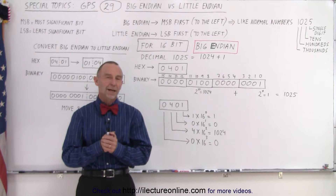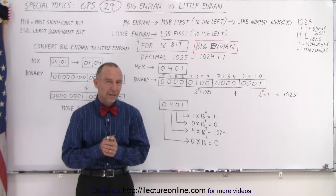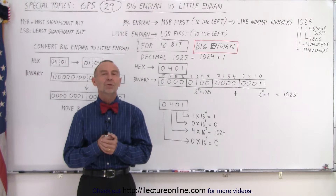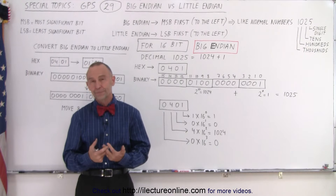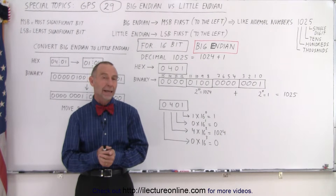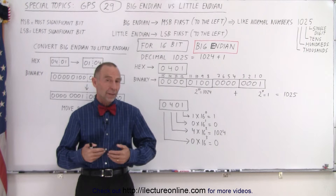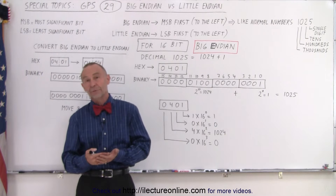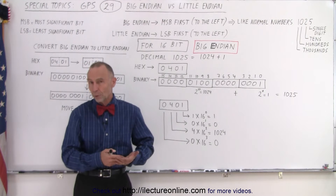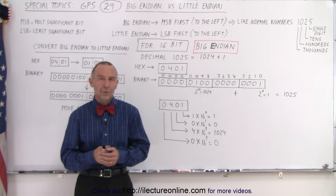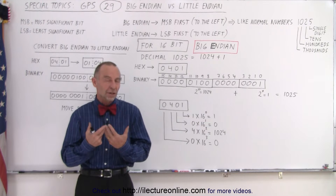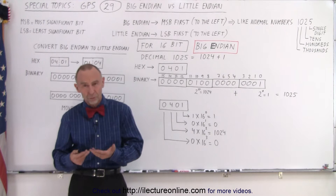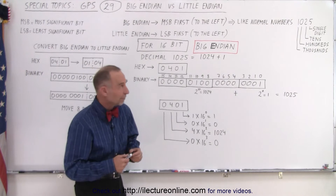Welcome to Electronline. GPS uses the Big Endian format of data. What does that mean? Sometimes other systems use Little Endian, and how do we convert from Big Endian to Little Endian or vice versa? In order to understand the concept better — what Big Endian means and how it's used in GPS — let's read the definition.